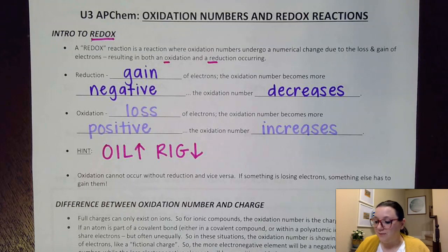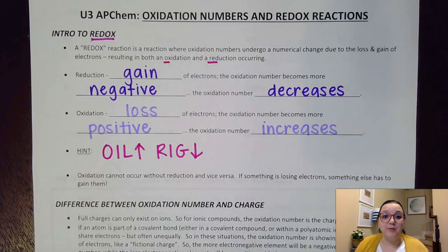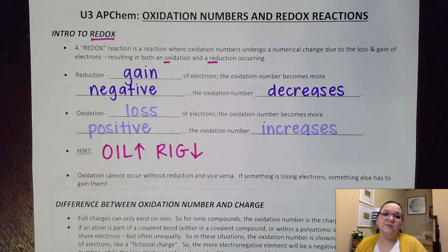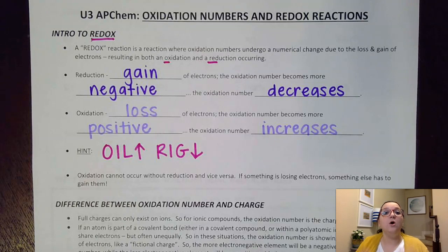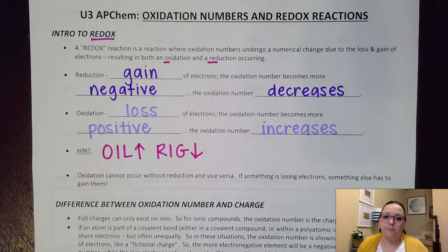Here's the key thing: I can't have one of these processes happen without the other. I can't have one thing gain electrons if there's not something else that's losing them. So we'll always notice in an overall reaction these two processes happening in conjunction with each other.